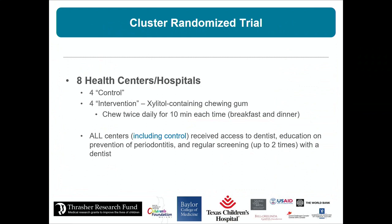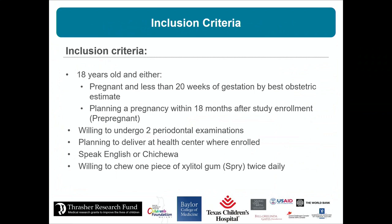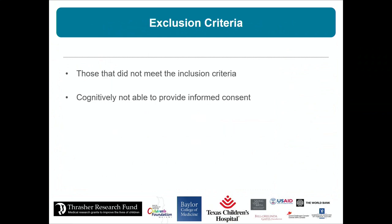Inclusion criteria: 18 years or older, pregnant at less than 20 weeks or planning pregnancy in the next 18 months, willing to undergo two periodontal exams, planning to deliver at the enrolled health center, speaking English or Chichewa, and willing to chew gum if assigned to that group. Exclusion criteria were those not meeting inclusion criteria or unable to provide informed consent.